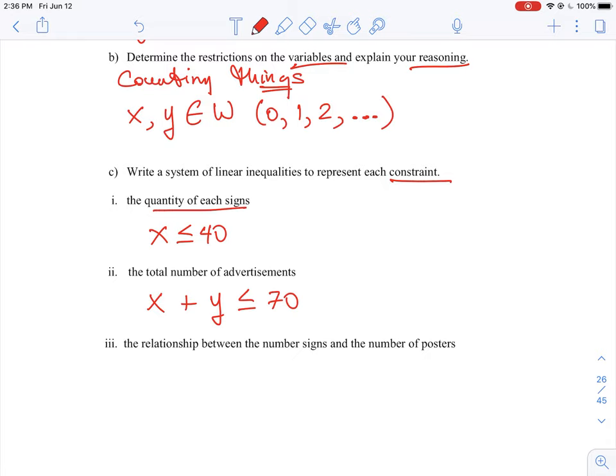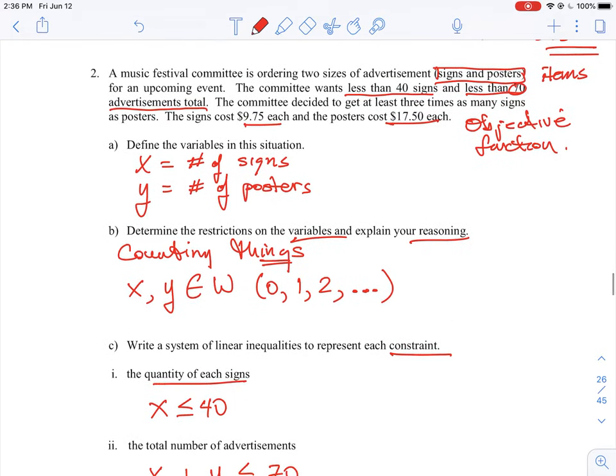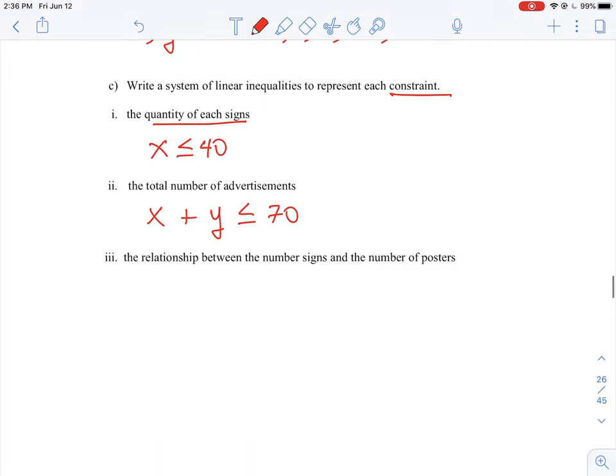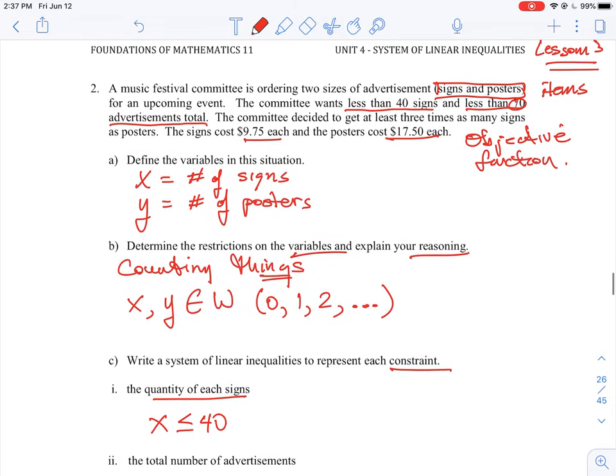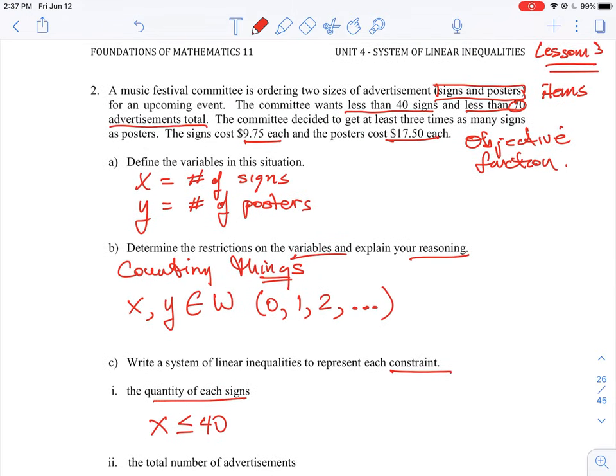And we need one more equation that we have to kind of figure out. We have to determine the relationship between the signs and posters. So near the end of the question, it says the committee decided to get three times as many signs as posters. So we have to express that as an equation. If we have, say we have signs - so if I use like little dots here for signs, and then squares for posters.